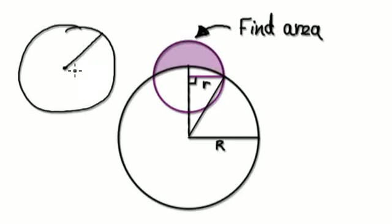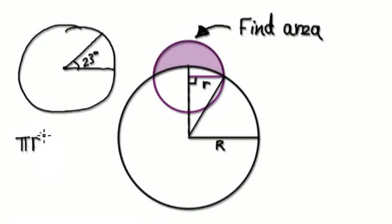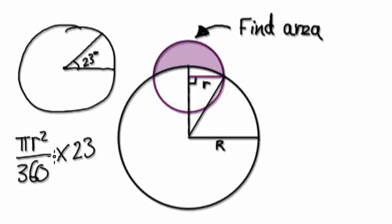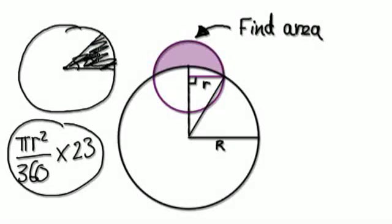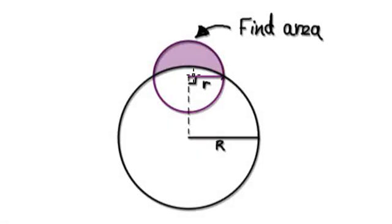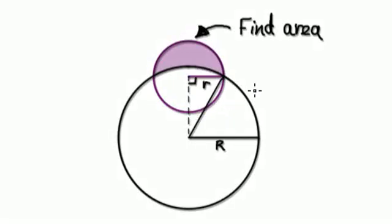So let's go back one step. If I were to give you a circle of radius R, and this angle here is, say, 23 degrees — how would you go about working out this area? Well, the way you would do this is to work out the area of the whole circle, which is pi R squared, cut it into 360 equal pieces, and then get 23 pieces. So in order to work out this area here, we would need to work out the angle.